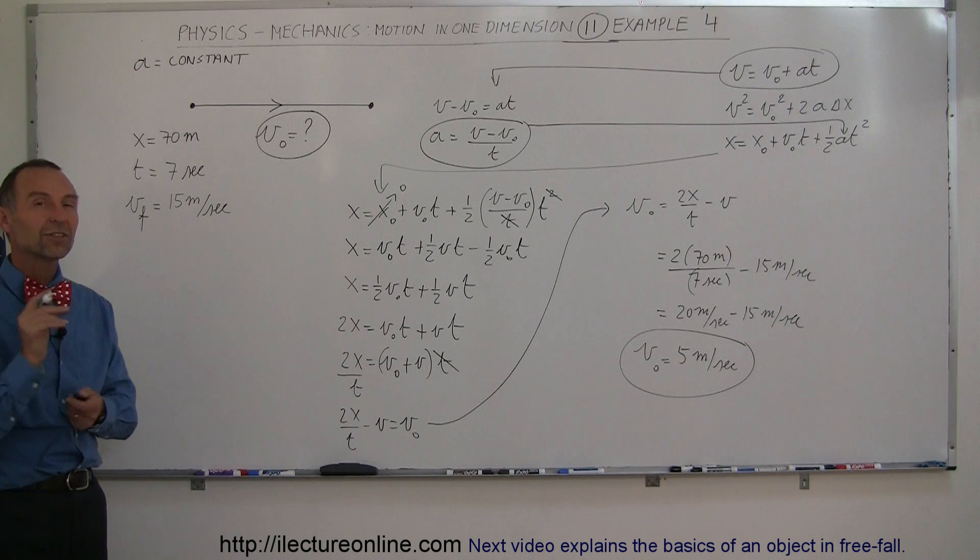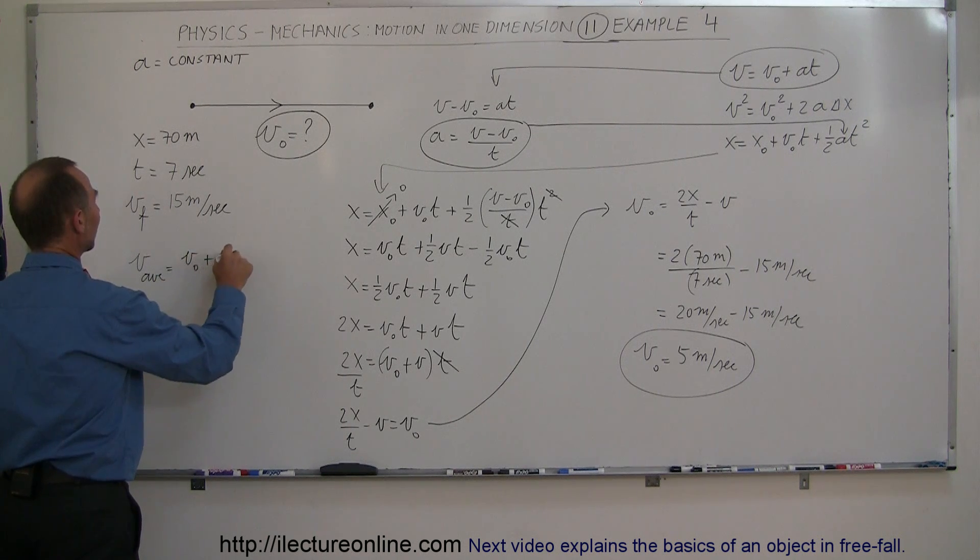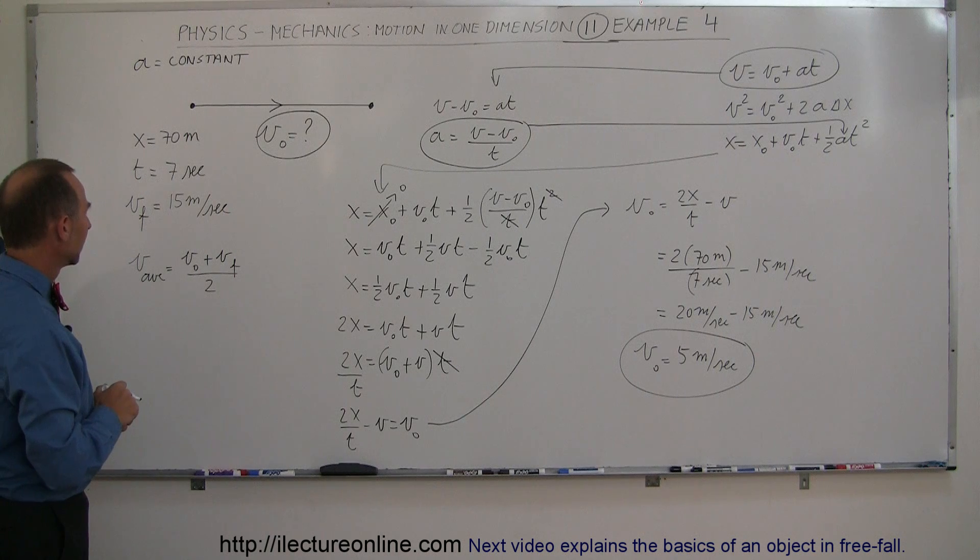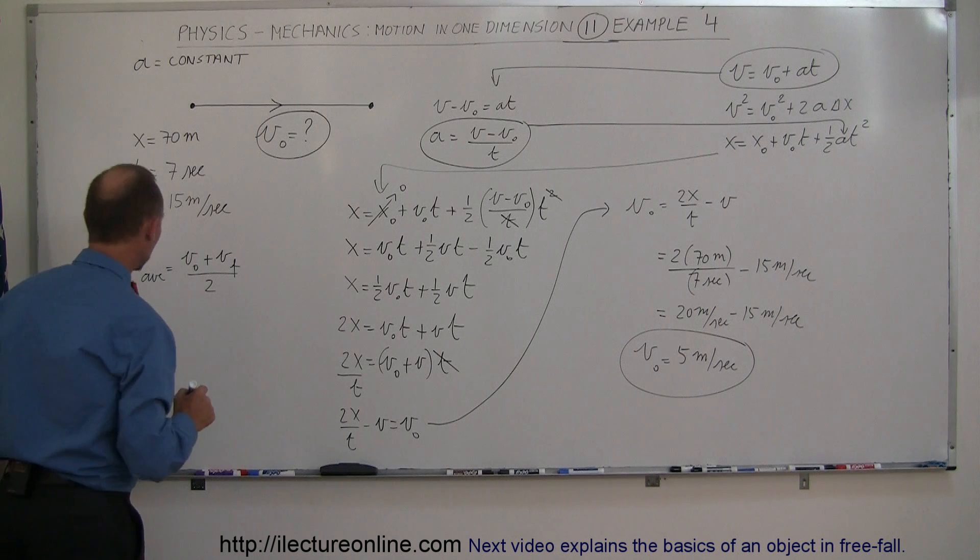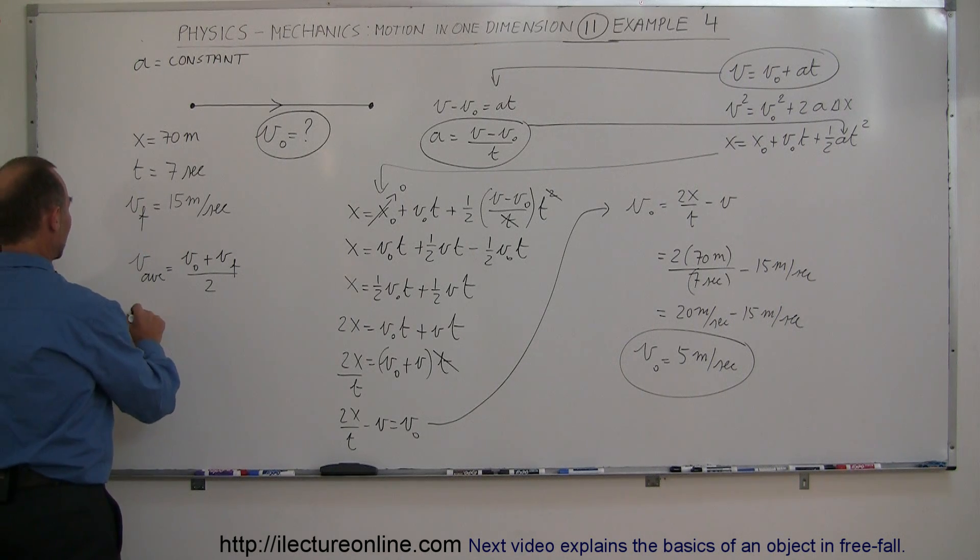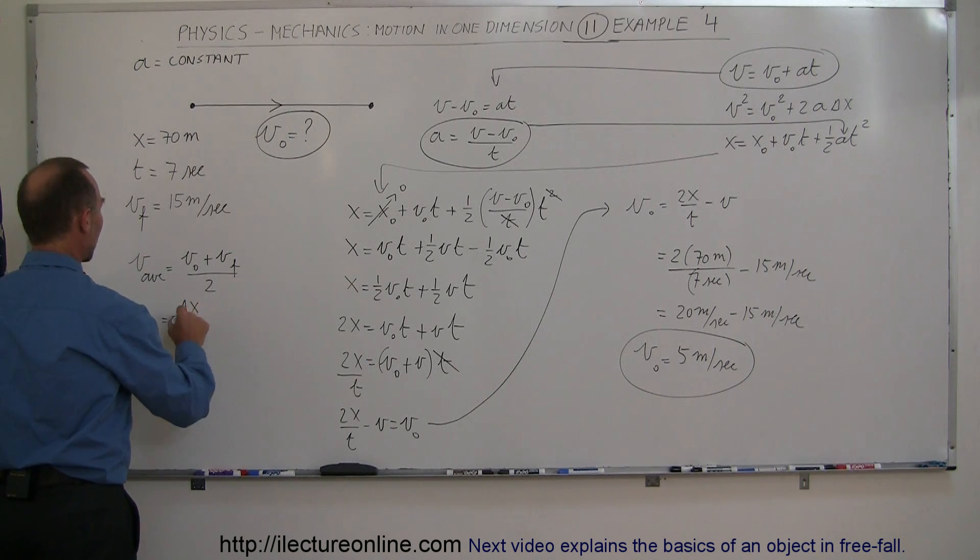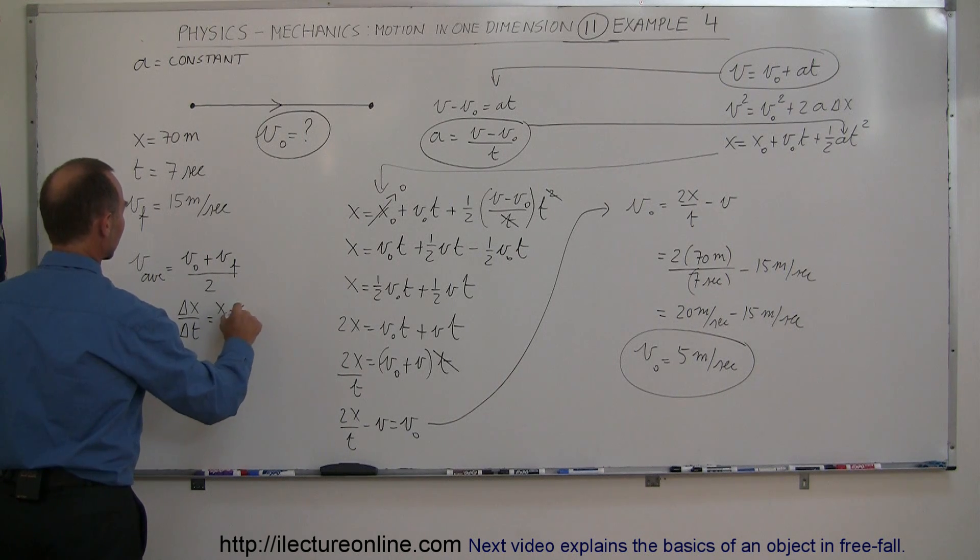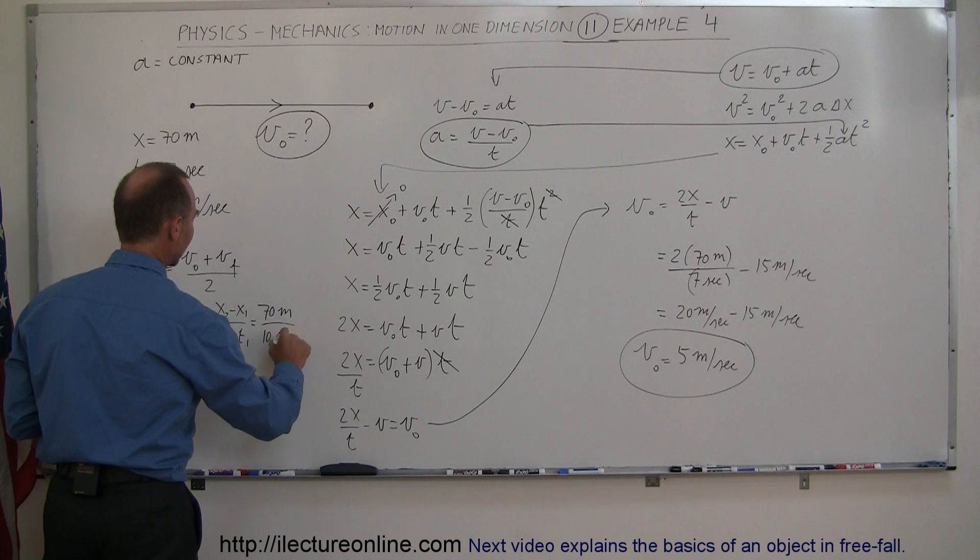Since there is constant acceleration, I can say that the average velocity, V average, equals V initial plus V final divided by 2. Now you say, well, I don't know the average velocity. Well, actually you do, because you can also say that V average equals the total distance traveled divided by the total time taken. So that would be X2 minus X1 over T2 minus T1, or that would be the total distance of 70 meters divided by the total time of—oh, not 10 seconds, but 7 seconds.